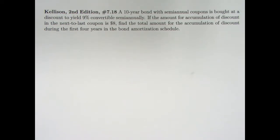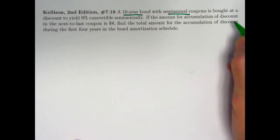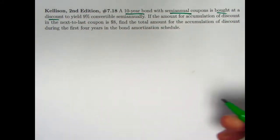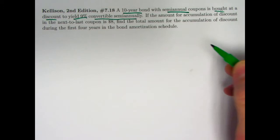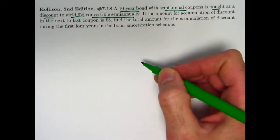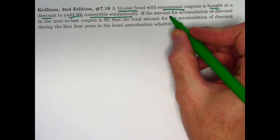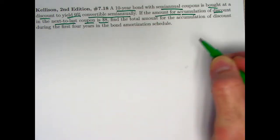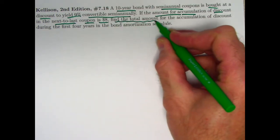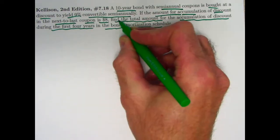So here is the problem statement. We've got a 10-year bond, semi-annual coupon, so that would be 20 coupons, bought at a discount, so the semi-annual coupon rate would be less than the yield rate. They tell you what the yield rate is convertible semi-annually, which would mean a 4.5% rate per half year. Evidently, the coupon rate, which you're not told, is less than that. You don't really need to worry about it, I guess. If the amount for the accumulation of discount in the next to the last coupon payment is $8, find the total amount for the accumulation of discount during the first four years in the bond amortization schedule. Sounds pretty tough.